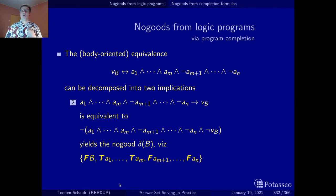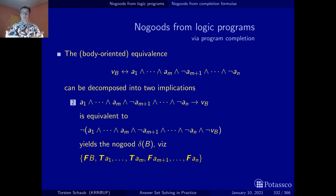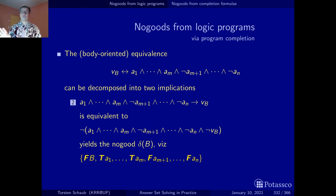The only thing done is moving the body variable to the front. What this no-good says: it can't be the case that the body is false but all of its body literals are true. A positive body literal is true if the atom is true and the negative one is true if the underlying atom is false. So this is the translation of the body-oriented equivalence into no-goods, giving us two different sets.